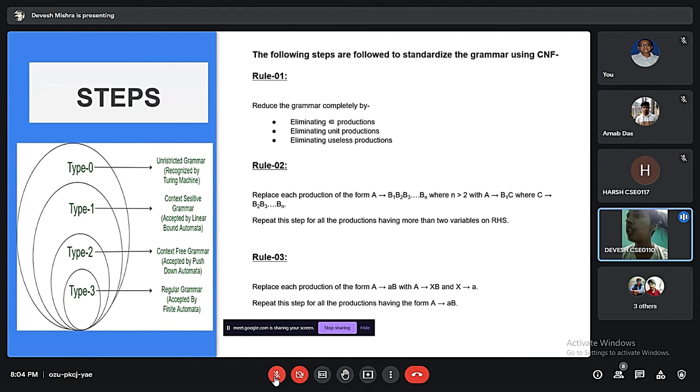Now we'll discuss the steps to standardize the grammar using CNF or Chomsky. There are mainly three rules which are most predominantly used. First rule is to reduce the grammar completely: eliminating null productions, eliminating unit productions, and eliminating useless productions. Number two: replace each production of the form A to B1, B2, B3...Bn where n is greater than 2, with A to B1C where C is B2, B3...Bn. Repeat this process for all productions having more than two variables on RHS. Rule number three: replace each production of the form A to aB with A equals XB and X is a.